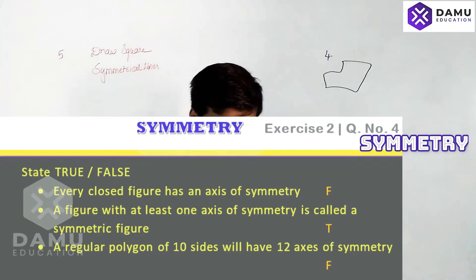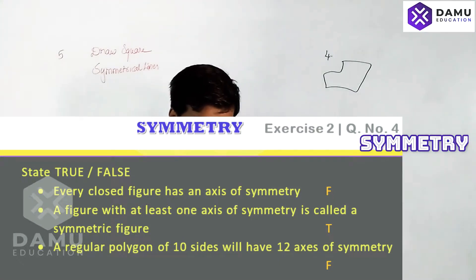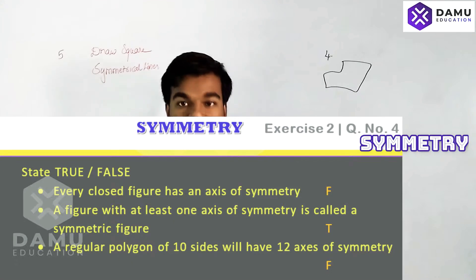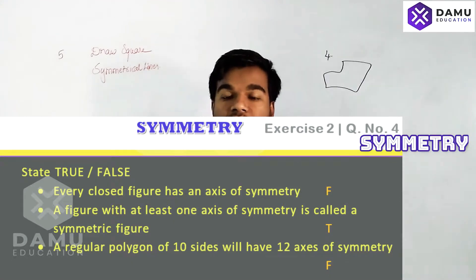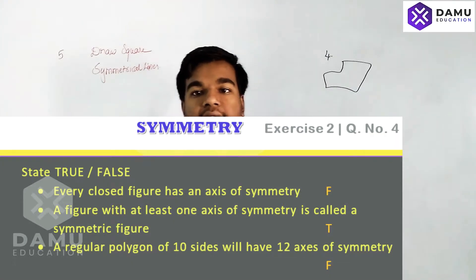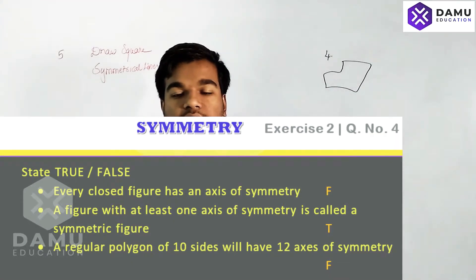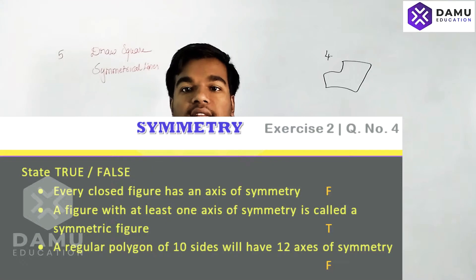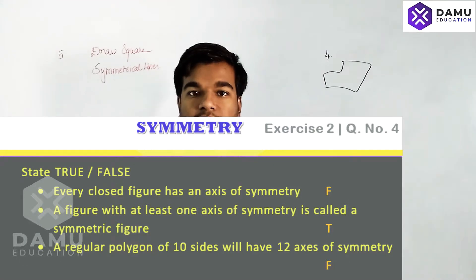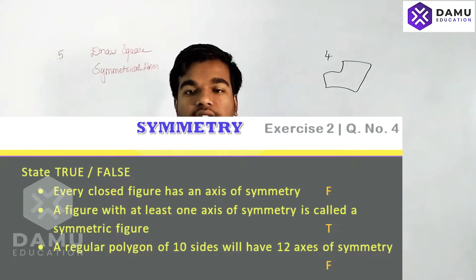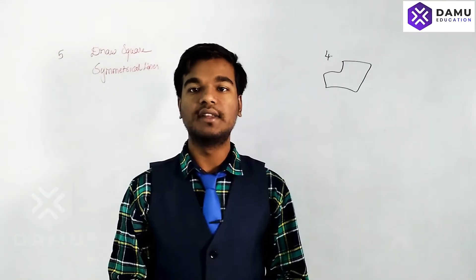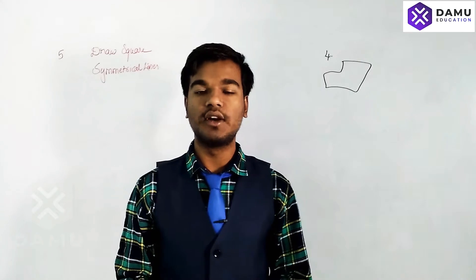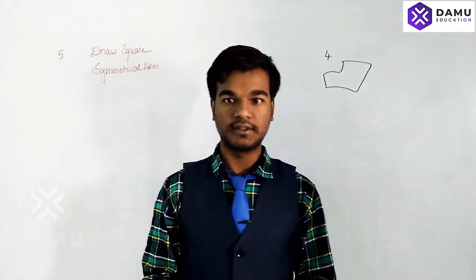Next: a figure with at least one axis of symmetry is called a symmetric figure. Yes, if any figure has at least one axis of symmetry or line of symmetry, then that figure is called a symmetrical figure. This statement is true.